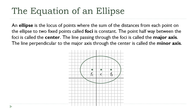The next conic section we're going to look at is called an ellipse. We're going to start with the same locus of points definition we used with the circle and the parabola. An ellipse is the locus of points where the sum of the distances from each of two fixed points, called foci, is a constant. The point halfway between the foci is called the center. The line passing through the two focal points is called the major axis, and the line perpendicular to the major axis through the center is called the minor axis. That's all we need to come up with our analytic geometry equation.